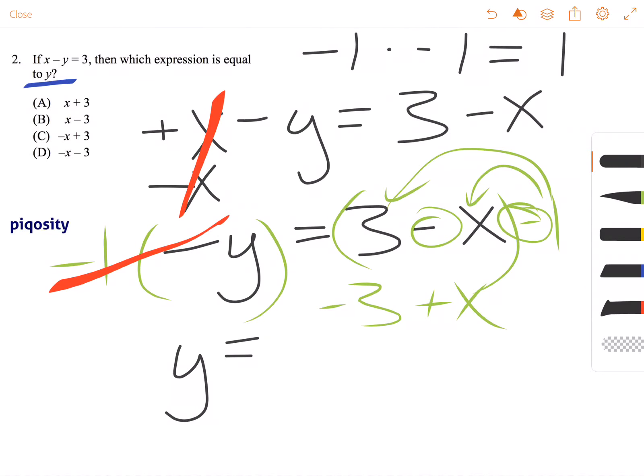Now, this is not normally how it's written. We always do the variable first, followed by what's called the constant. So y equals positive x minus 3, or y equals x minus 3. And the only answer choice that matches this is answer choice B.